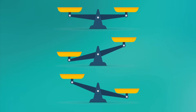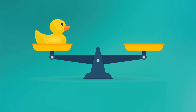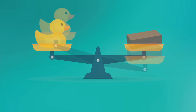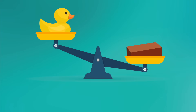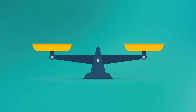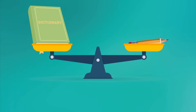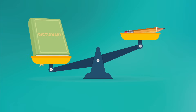We can use a balance to compare the mass of two objects. If we put this rubber ducky on one side of the balance and this brick on the other side, we can see the brick has more mass than the rubber duck because its side of the balance is lower. Which do you think has more mass — a dictionary or a pencil? If you said the dictionary, that's right. The dictionary has more matter, or substance, inside of it compared to the pencil, so it has more mass.